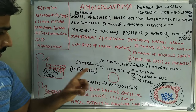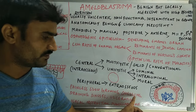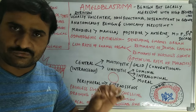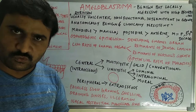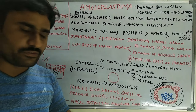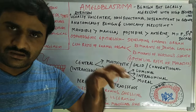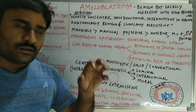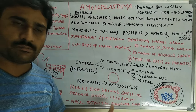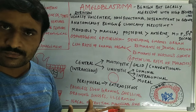The most common clinical feature is painless slow-growing swelling. If secondarily infected it may become painful, and you may see draining sinuses or ulceration of the overlying mucosa. If amyloblastoma involves the maxilla, there may be nasal obstruction or maxillary sinus involvement.